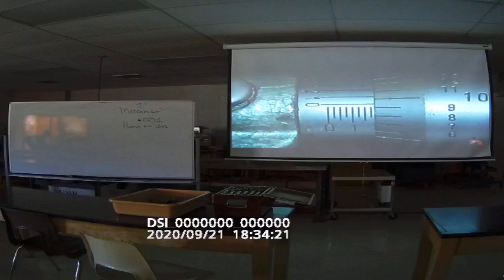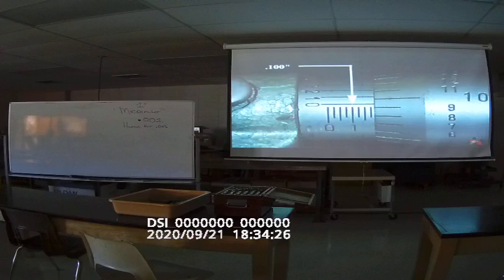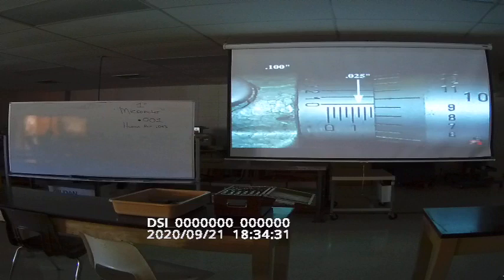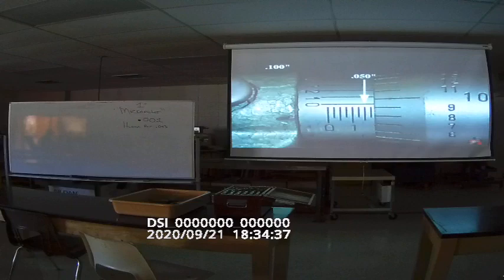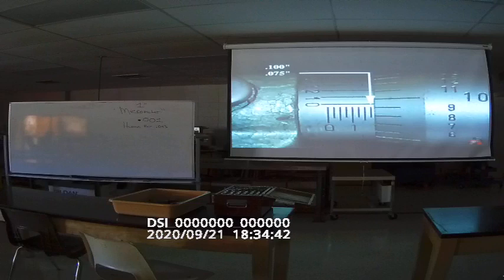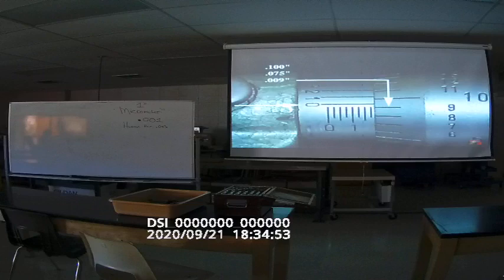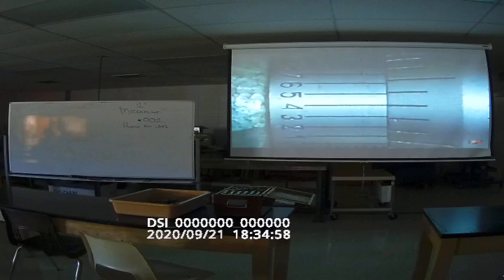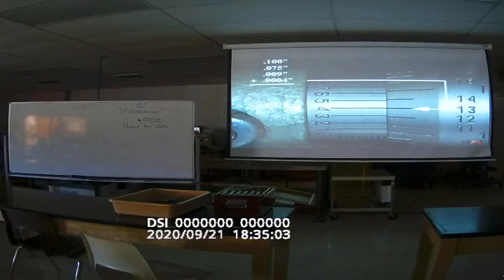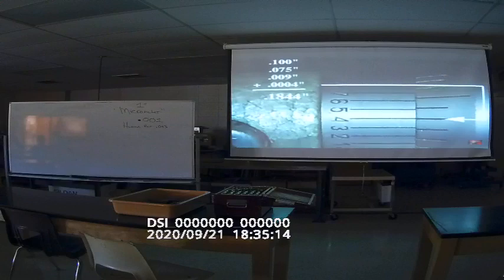To read a vernier micrometer, first add up all the numbers to the left of the thimble. Using this picture as an example, the largest number to the left of the thimble is 1. Write this down as 100,000th of an inch. Now, count how many 25,000th lines there are between the large number 1 and the thimble. As you can see, there are three short lines showing. Write this down as 75,000th of an inch. The next step is to read the thimble. Look at the thimble and see what number lines up with or are just below the line on the sleeve. This is written as 9,000th of an inch. The last step is to read the vernier scale. Find the line on the vernier scale that lines up with the line on the thimble and write down this number. Do not write down the number on the thimble. Add up all the numbers you wrote down and this will tell you what the micrometer reads. In this example, the measurement is 1,844,000th of an inch.